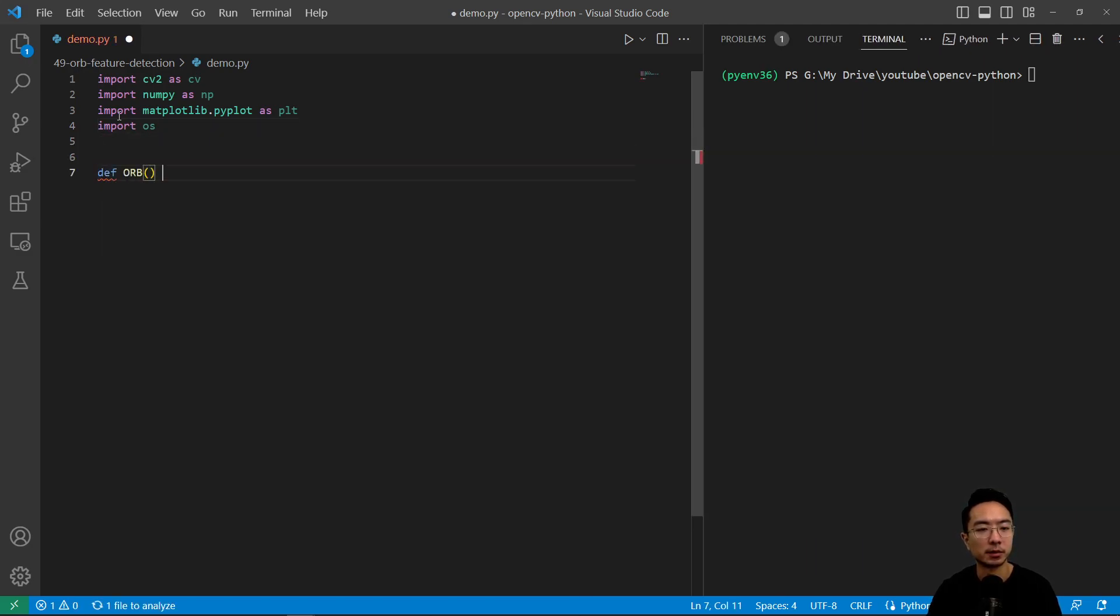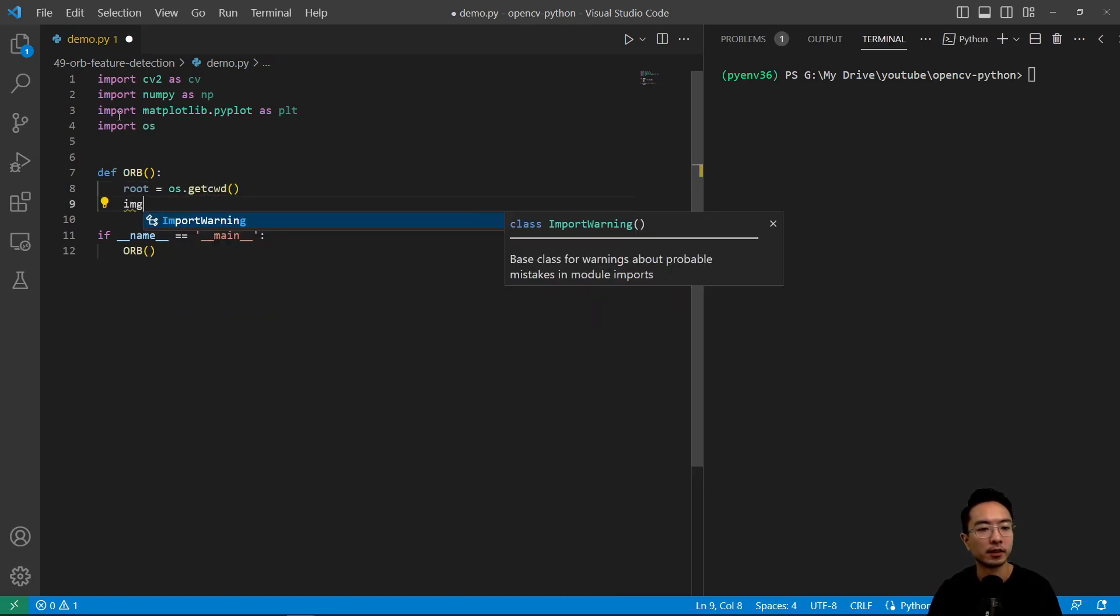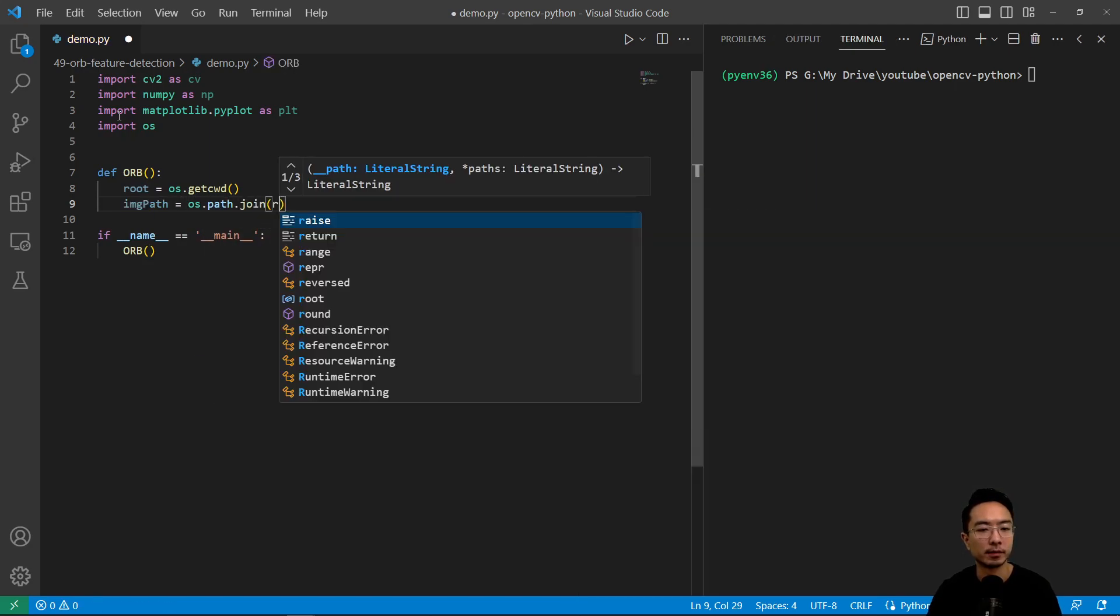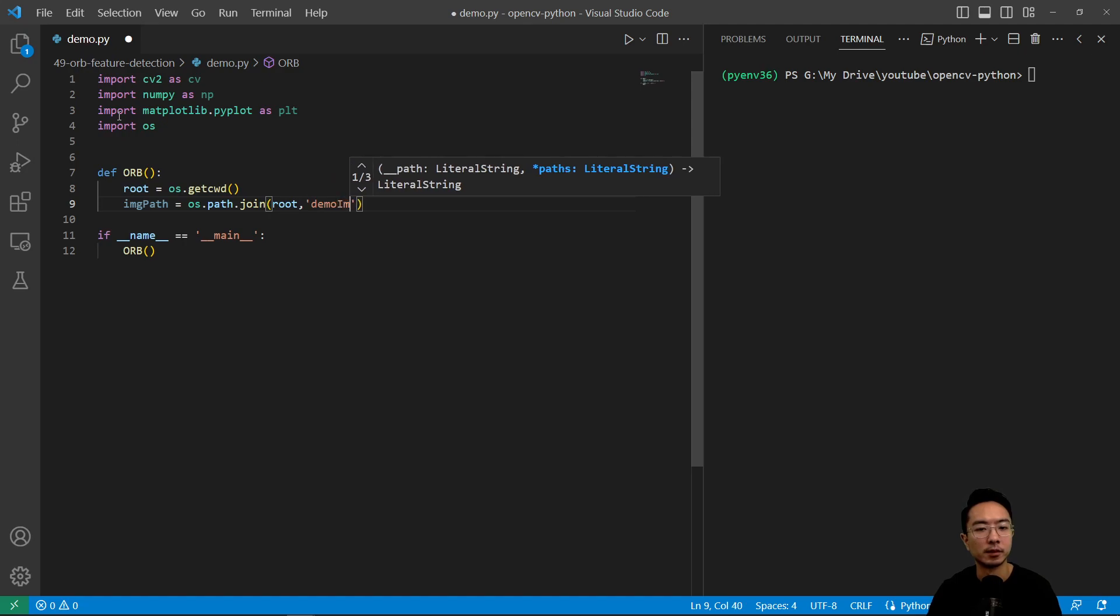So we're going to call our function orb here. And we have our if name equals main. And we're going to call our orb function. So inside of here, we're going to do root equals os.getcwd, and then our path, os.path.join, and pass in root, demo images, tesla.jpg.